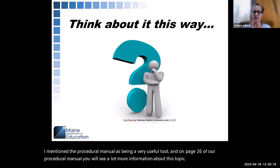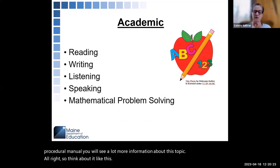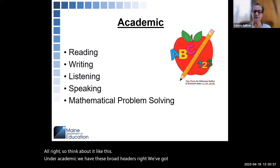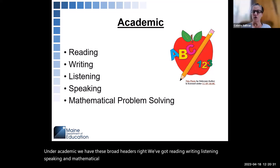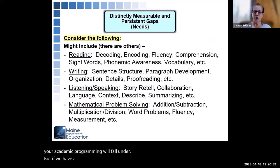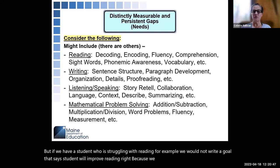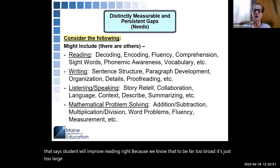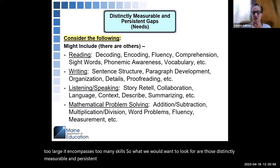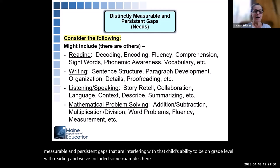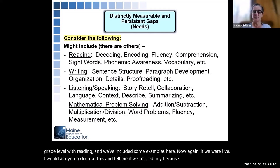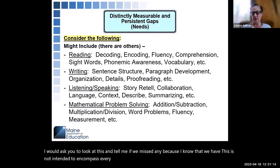Think about it like this. Under academic, we have broad headers: reading, writing, listening, speaking, and mathematical problem solving. Those are the broad components that all academic programming will fall under. But if we have a student who is struggling with reading, for example, we would not write a goal that says 'student will improve reading' — because we know that to be far too broad. It encompasses too many skills. So we look for those distinctly measurable and persistent gaps interfering with the child's ability to be on grade level. We've included some examples here, though this is not intended to encompass every skill.